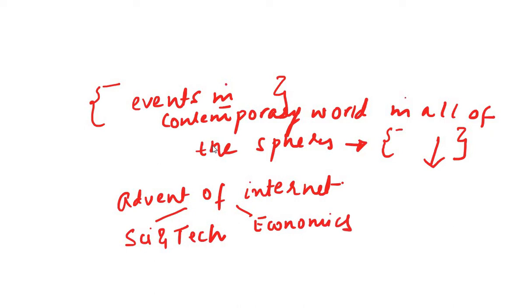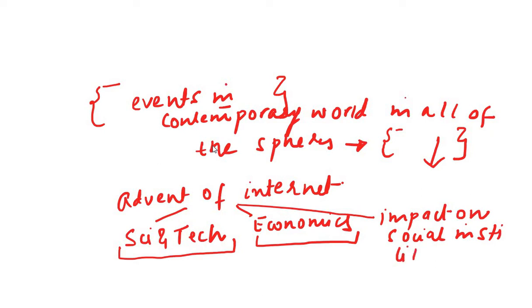The impact of the advent of internet on the economics of a state or the world in general. The science and tech aspects include the technologies behind internet. The advent of internet can also be studied in terms of its impact on social institutions like education system, family, media, and so on.